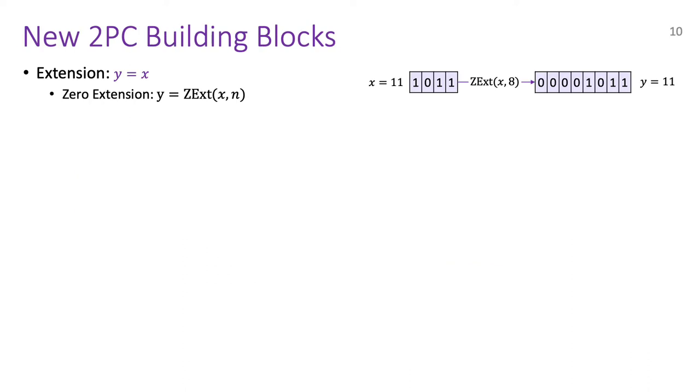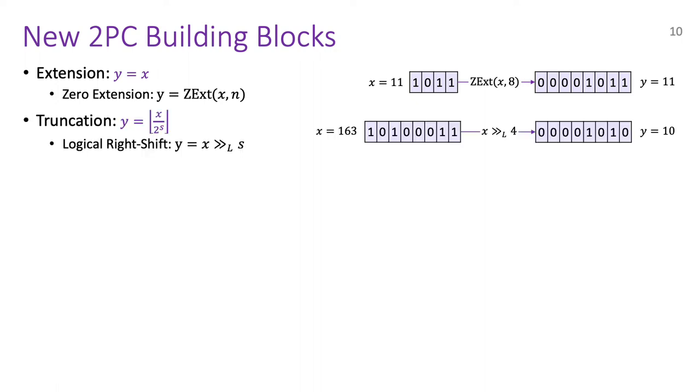Our first building block is zero extension, which simply increases the bitwidth of the input integer without changing its value. For example, here a 4-bit integer is extended to an 8-bit integer by prepending four zeros. Next, we have logical right shift which takes a shift amount S as input and does the following. It shifts the bits of the input integer to the right by S places and in the process, discards the lower S bits. To maintain the same bitwidth, it also puts 0 in the upper S bits. We have another variant of truncation called truncate reduce which is more commonly used. It does exactly what logical right shift does, except it also reduces the bitwidth by shift amount.